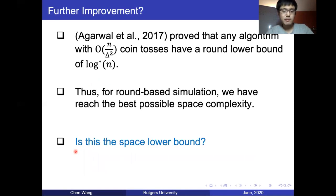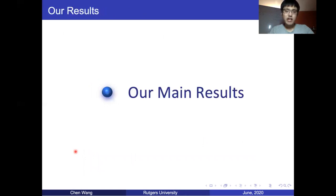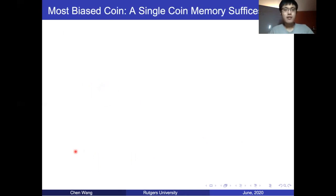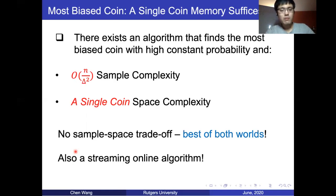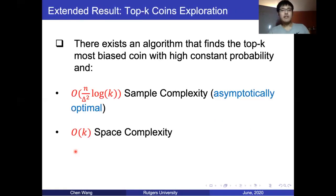We conjectured this was the space lower bound for the problem itself, but it turns out it isn't. Our main result proves that there exists an algorithm that finds the most biased coin with constant high probability, with asymptotically optimal sample complexity, and by storing only a single coin. We find the algorithm really cool because there is no sample-space trade-off — we can achieve the best of both worlds. This is also a streaming online algorithm, meaning the moment we identify the most biased coin we can output it already. We also extend the algorithm to top-k coins, getting an algorithm with asymptotically optimal sample complexity and O(k) space.